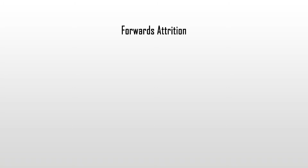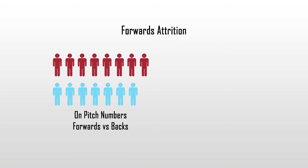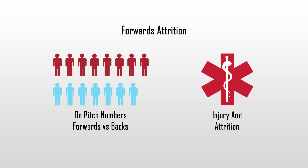Firstly, you have more forwards on the pitch at any one time. Secondly, the attrition rate amongst forwards can be higher. For instance, in the last World Cup, 11 backs suffered tournament-ending injuries, whereas 16 forwards were ruled out through injury.